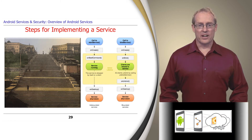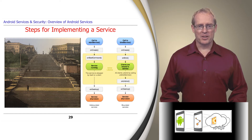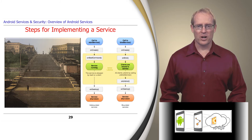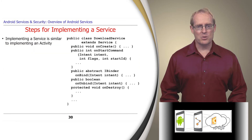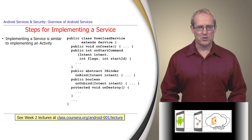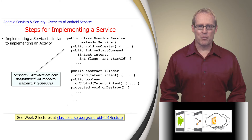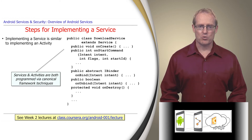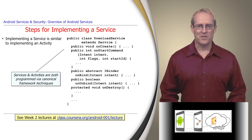Now that we've presented an overview of started and bound services, we'll summarize the steps needed to implement them using Android's services framework, which is part of the Android Activity Manager Service middleware. The steps used to implement a service are similar to the steps used to implement an activity, since both support canonical framework techniques such as inversion of control, domain-specific structure and functionality, and semi-complete portions of applications.